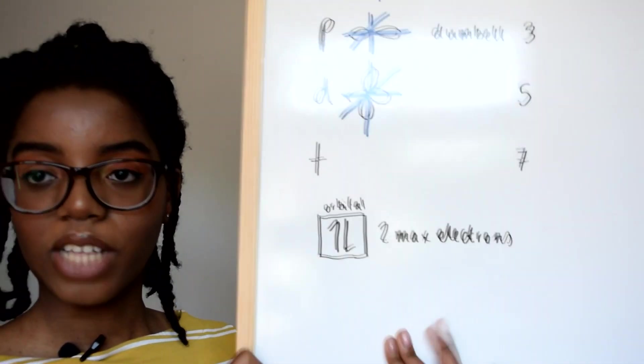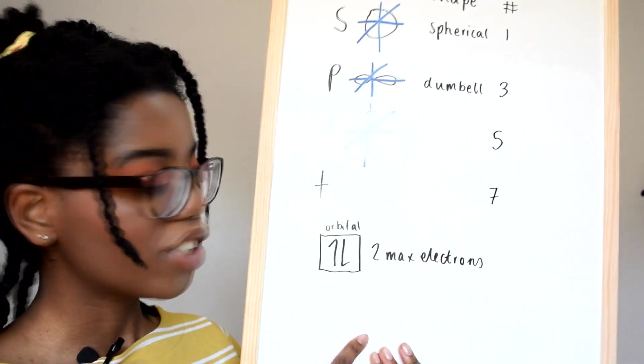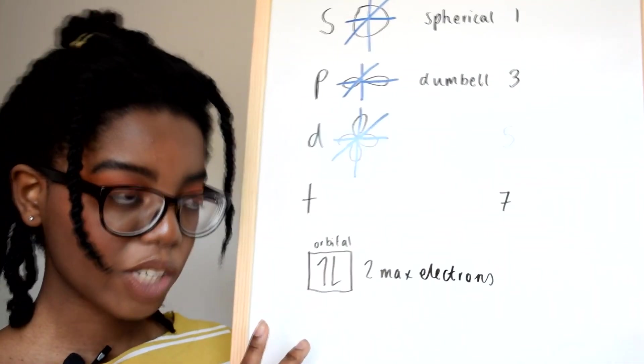Each orbital is made up of two electrons spinning oppositely to each other, so in each orbital you can have a maximum of two electrons.